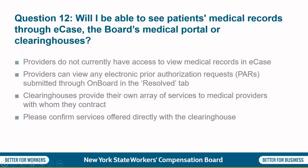Question 11: How do I know when a legal issue has been resolved and I should be paid, and how long should I wait for payment? Providers should receive non-schedule loss of permanent disabilities, or PD-NSL, notices if they have been placed on notice. An insurer has 30 days to pay from the PD-NSL date. If the provider does not get paid within 30 days, they should file Form HP1 through onboard limited release. Question 12: Will I be able to see patients' medical records through eCASE, the Board's medical portal, or clearinghouses? Providers do not currently have access to view medical records in eCASE since they are not a party to the claim. However, requests from providers for access are being taken into consideration for a new onboard system.